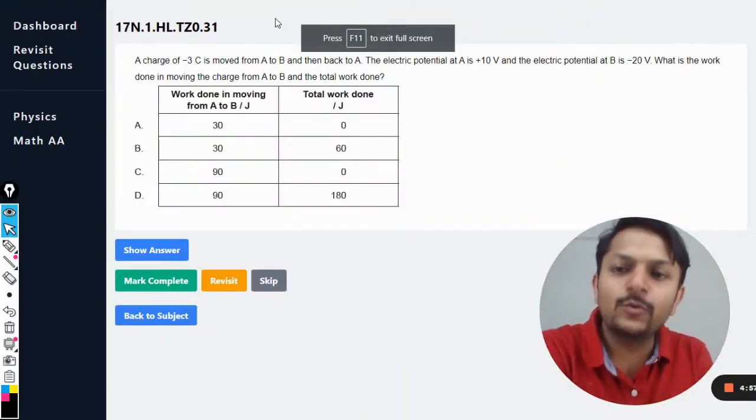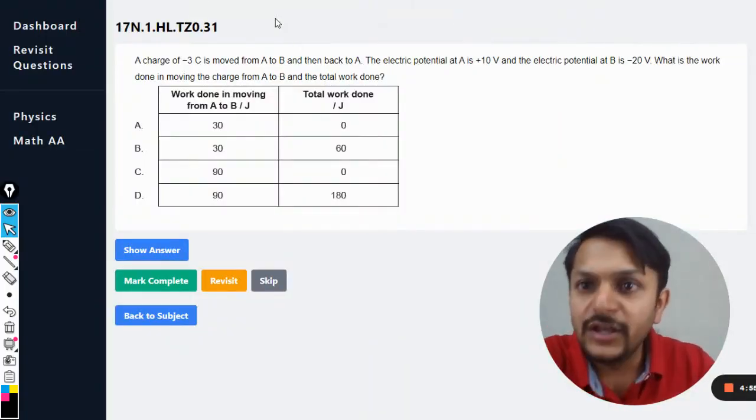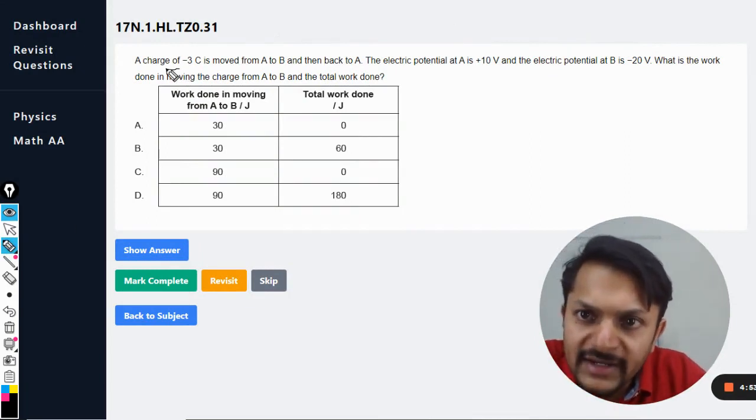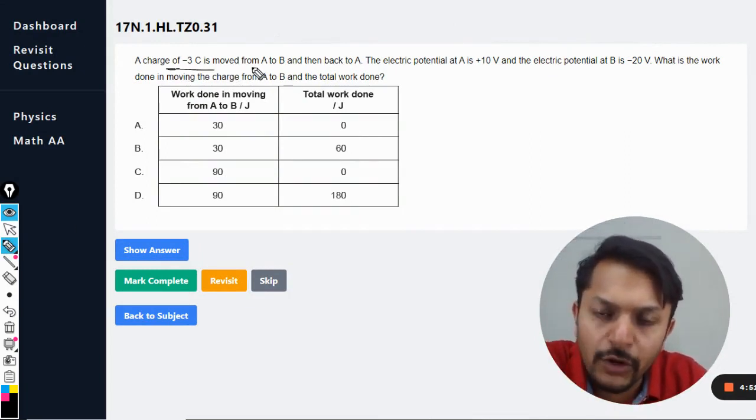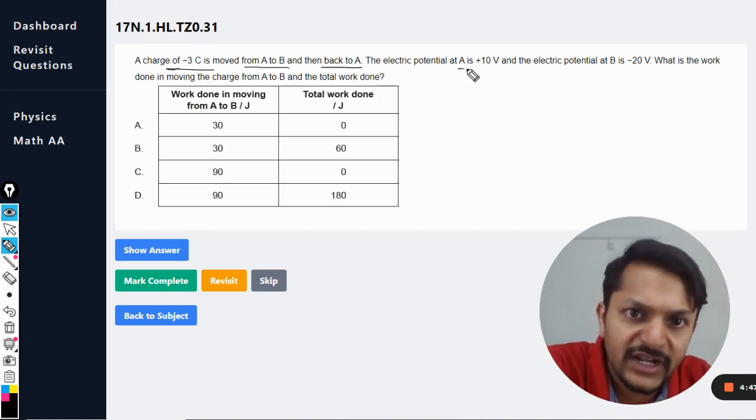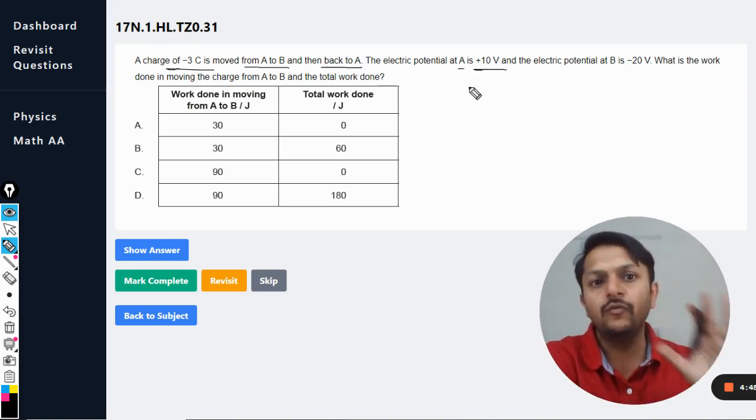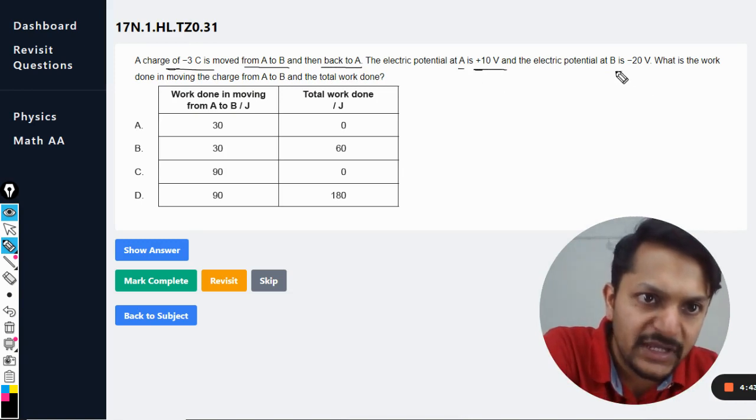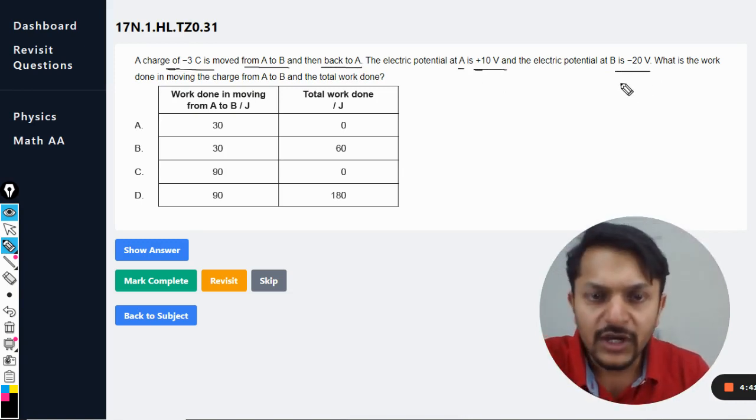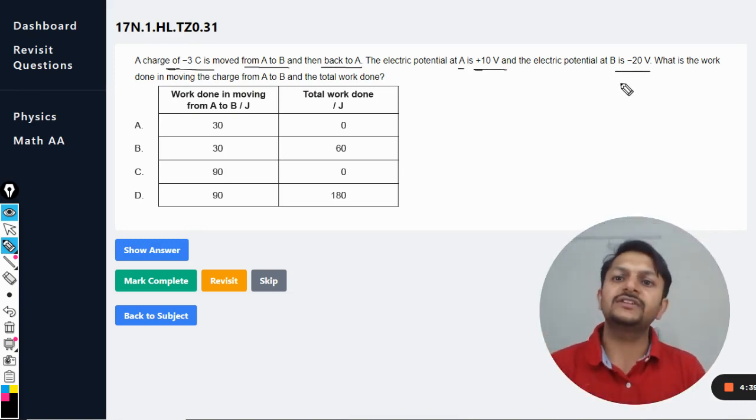Okay dear students, let us see what is there in this question. A charge of -3 coulomb is moved from A to B and then back to A. The electric potential at A is positive 10 volt and electric potential at B is negative 20 volt. What is the work done in moving the charge from A to B and the total work done?